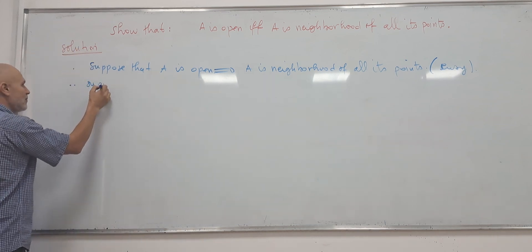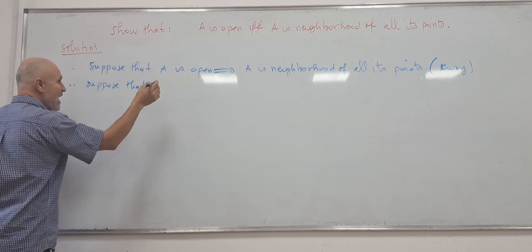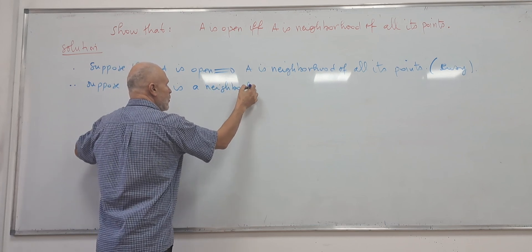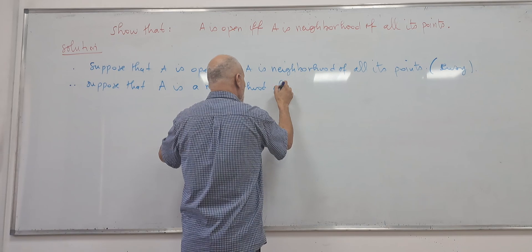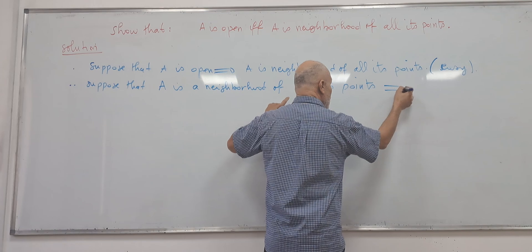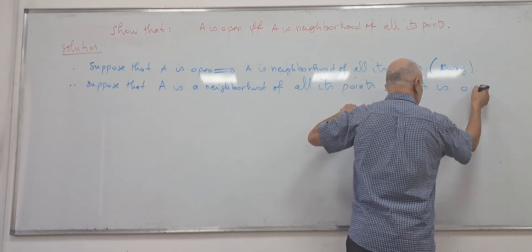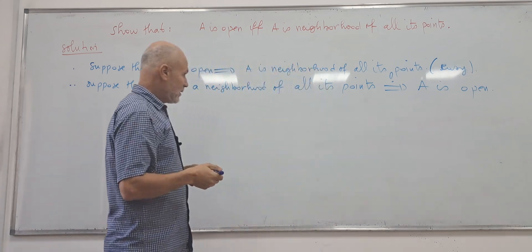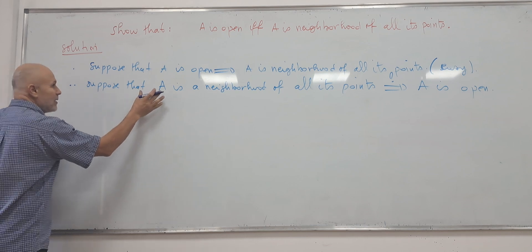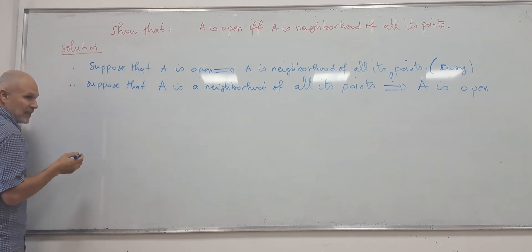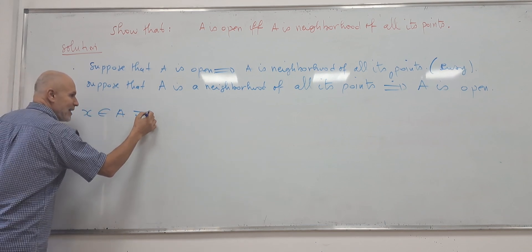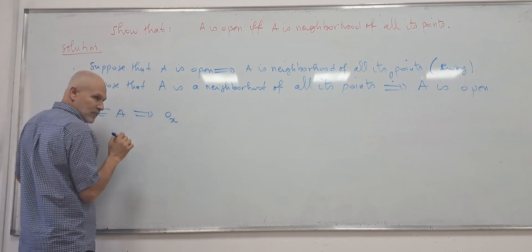Suppose that A is a neighborhood of all its points. So A is a neighborhood of all its points. Since A is a neighbor of all its points, this means that for any X from A, there exists an open O_X.